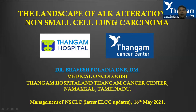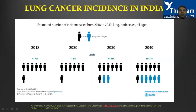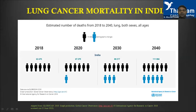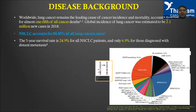The landscape of ALK alteration is very important in NSCLC — we should not miss this. Lung cancer in India is very high, as shown by GLOBOCAN 2018 data, and mortality is similarly high. We lose almost 90 percent of patients; hardly five to ten percent survive long-term. Globally, almost 20 percent of cancers are lung cancer, with 2.1 million new cases, and NSCLC constitutes 80 to 85 percent of them. Five-year survival is less than 25 percent, and in stage four with distant metastasis it is less than 10 percent.